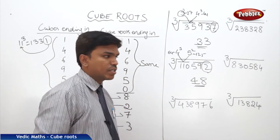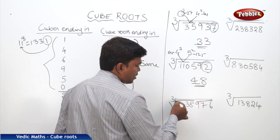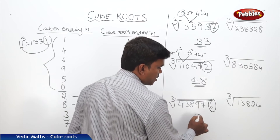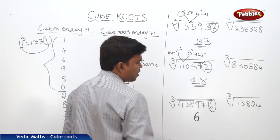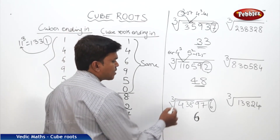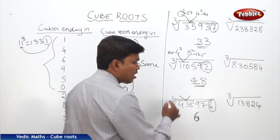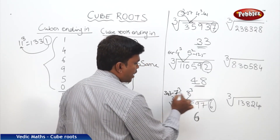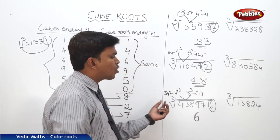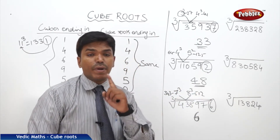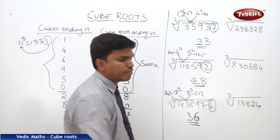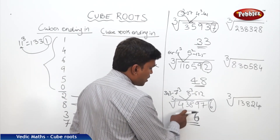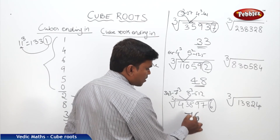Now I will solve the problems. First: partition into 3 digits and 3 digits from the right side. The cube number ends in 6, so the cube root should end in 6. Now the second partition is 438. 438 comes between 7 cubed (343) and 8 cubed (512). We always take the lesser number, which is 7. So the answer is 76.